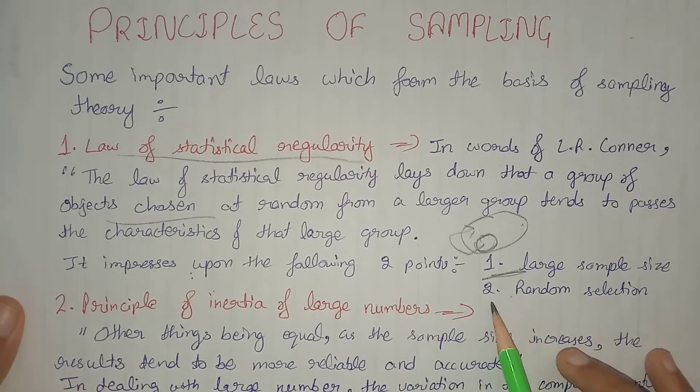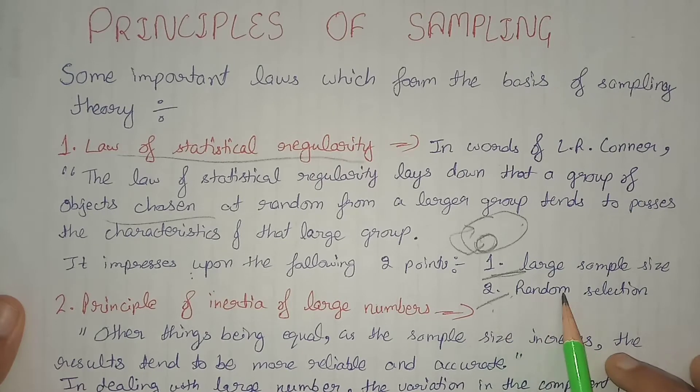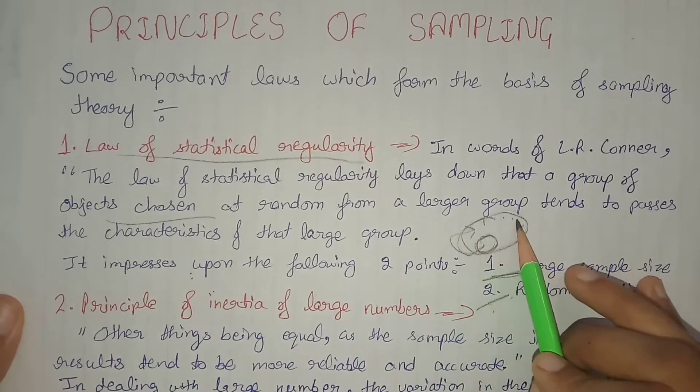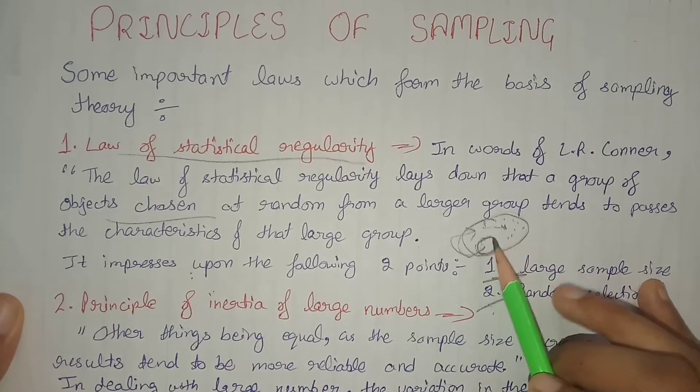Random selection meaning that in our population, every unit that is present has an equal chance to be selected in the sample.